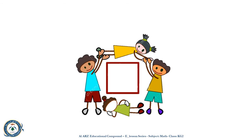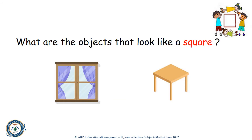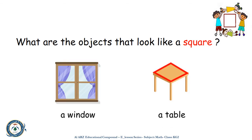I have four corners. I have four sides. All of my sides are the same length. Who am I? I am a square. Yes, a square! What are the objects that look like a square? A window and a table. Great!